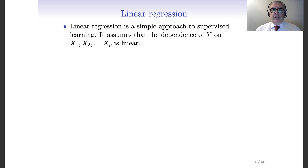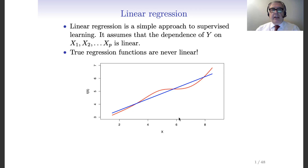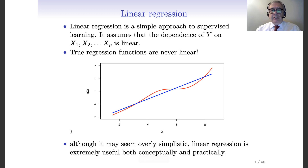As already said, linear regression is a simple approach to supervised learning. The basic assumption is that y depends on x with a linear relationship. Something you should keep in mind is that the true regression functions are never linear, so we are just using an approximation. Here the true regression is represented as the red curve and the linear regression as the blue one. In some cases, as in this plot, the linear regression could be a good approximation — useful both conceptually and in practice.